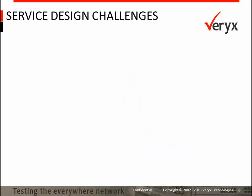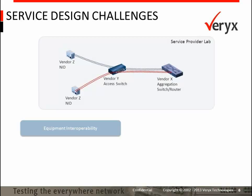Designing a new CE 2.0 grade service has the following considerations for network architects. The first step is choosing the right kind of network equipment for each network node. In this process, more often than not, you end up selecting equipment from different vendors for each node based on your requirement. So it becomes very important to verify the interoperability of this equipment to deliver a seamless experience to the customer.